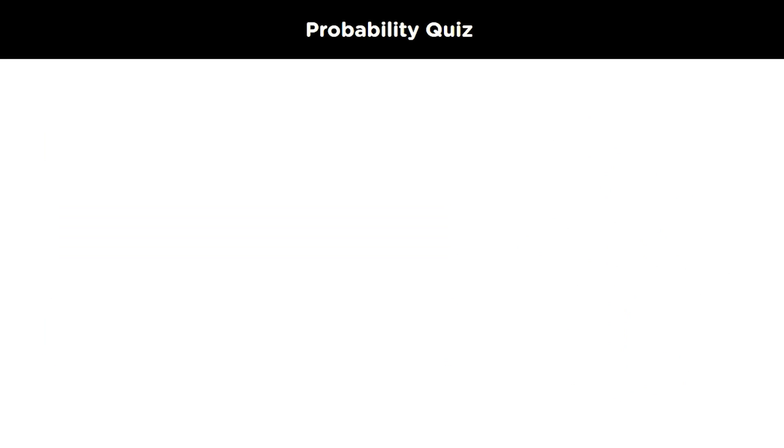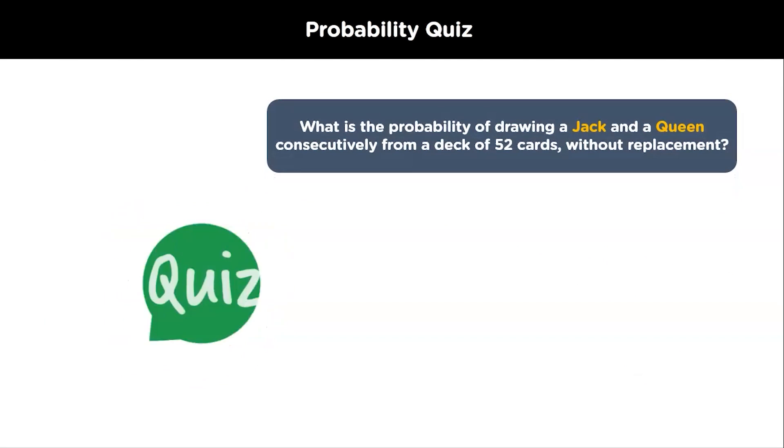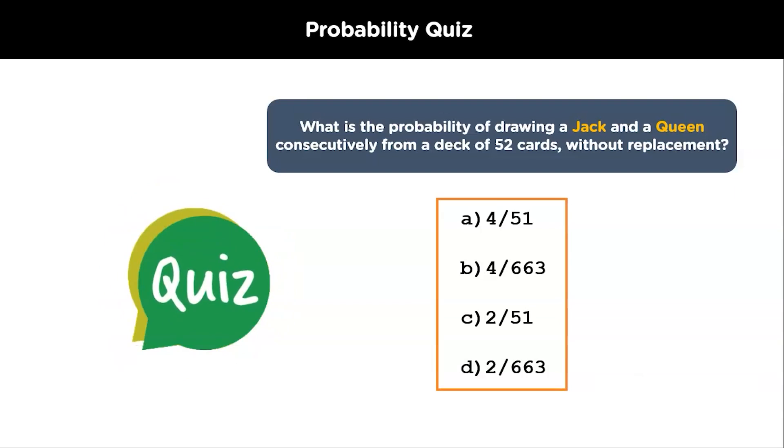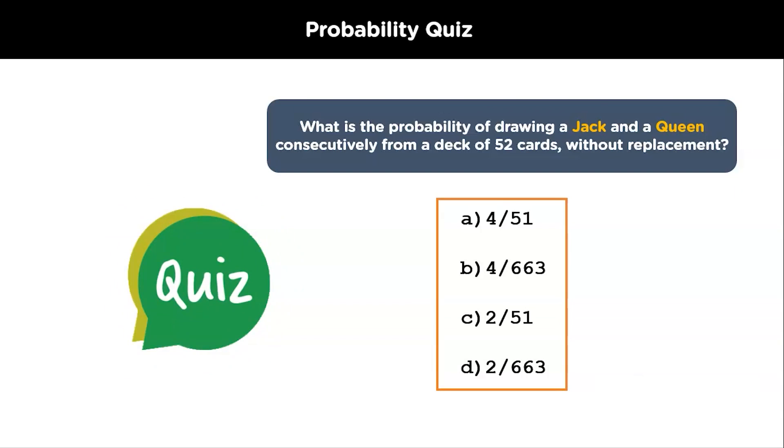Now that we know about probability, let's see if you can answer this question. What is the probability of drawing a Jack and a Queen consecutively from a deck of 52 cards without replacement? Here are your options. Post your answers in the comment section and let us know.